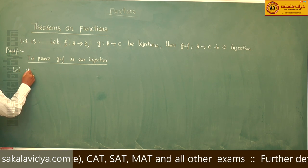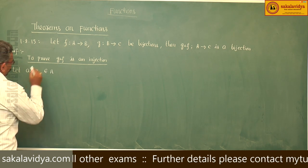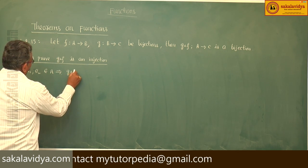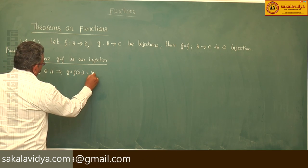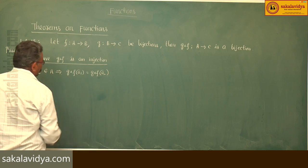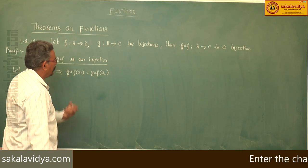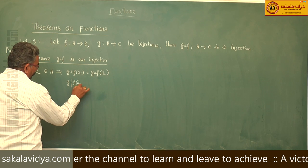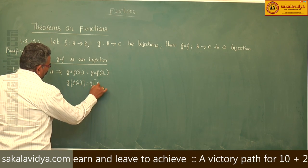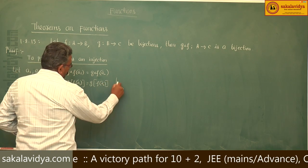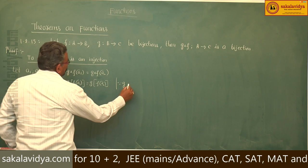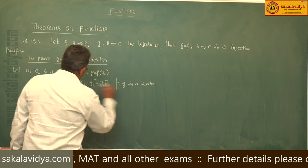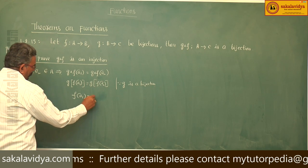Let a1, a2 belong to A. That implies g∘f(a1) = g∘f(a2). We can write this as g(f(a1)) = g(f(a2)). Since g is a bijection, bijection means injection, we can write f(a1) = f(a2).